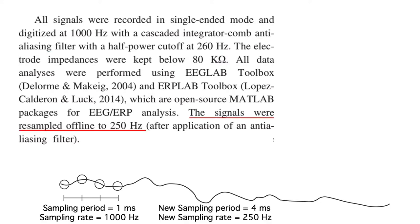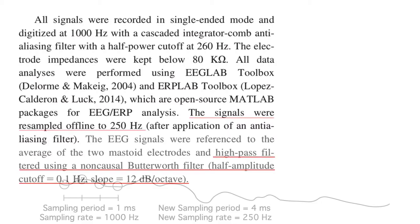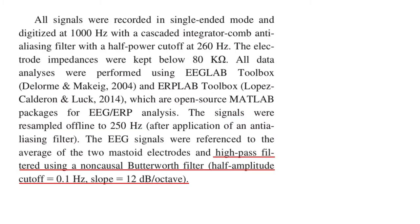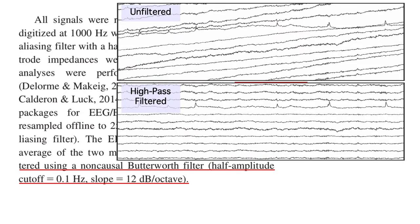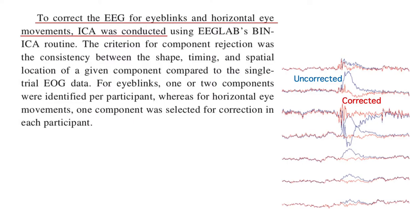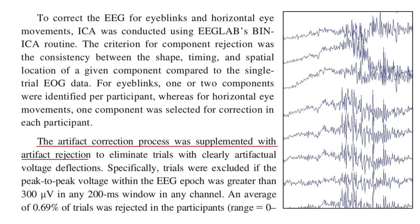Felix resampled the data offline to 250 Hz, which just made the data files smaller and the processing faster. A high-pass filter was then applied that filtered out signals below 0.1 Hz, which just gets rid of slow voltage drifts that mainly come from the skin. Felix then applied ICA artifact correction to subtract away voltages from blinks and small eye movements, and then he used artifact rejection to throw out the small number of trials that had other kinds of artifacts.